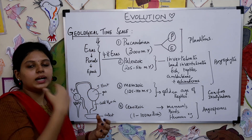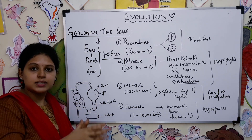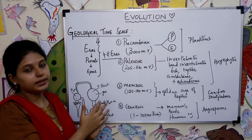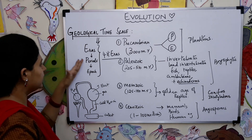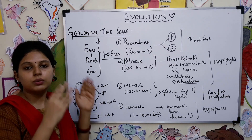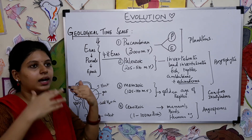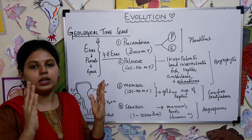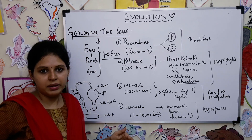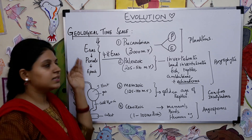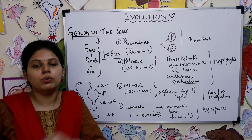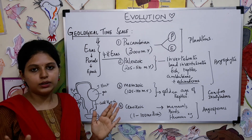In the geological time scale we have four important eras, each significant for a particular primitive organism. These eras are divided into various periods, and periods are divided into epochs. You can remember this as a kingdom: the era is the king, the periods are the ministers, and the epochs are the other workers in the kingdom.